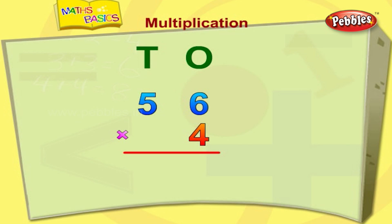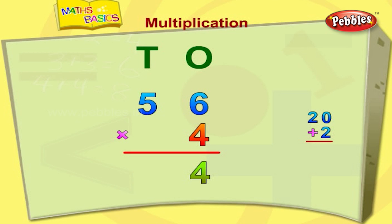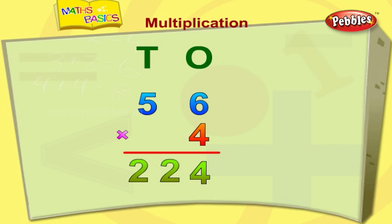Let's multiply the ones column first. Six fours are twenty-four. Write four under the ones column and carry the two to the tens column. Now multiply the tens column — five fours are twenty. Add the carried two to twenty — we get twenty-two. Therefore, fifty-six multiplied by four is equal to two hundred and twenty-four.